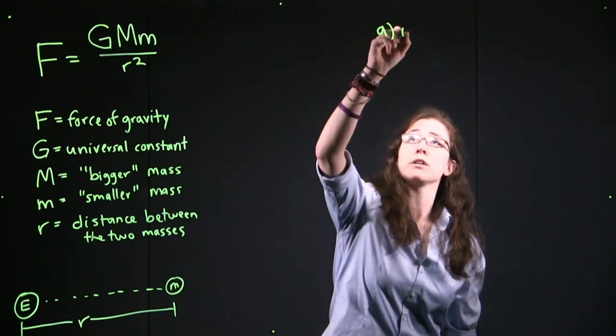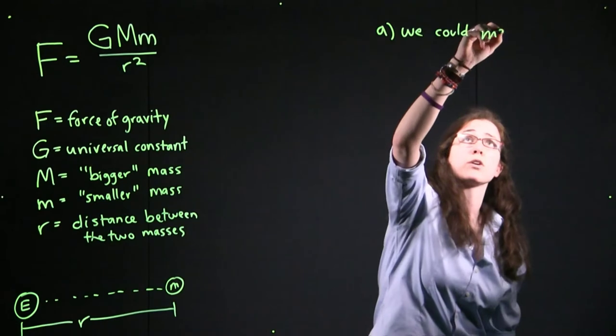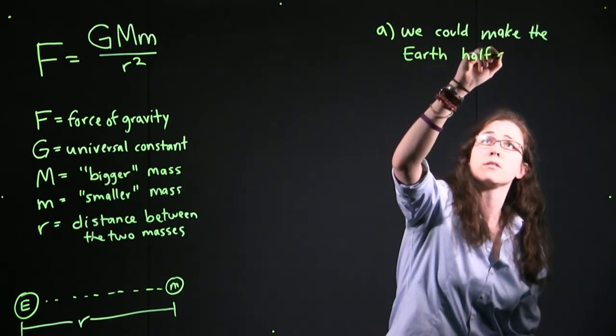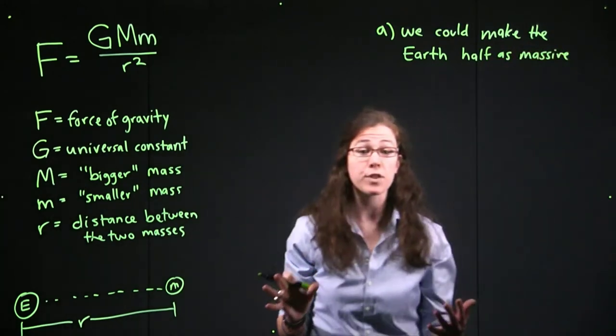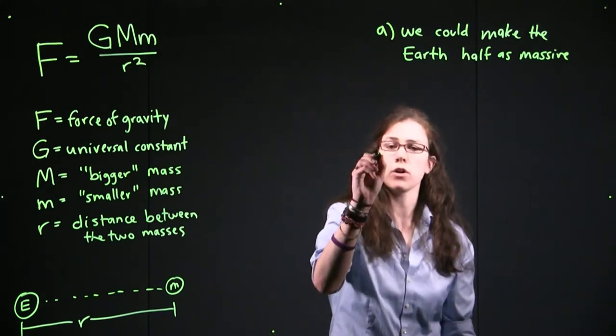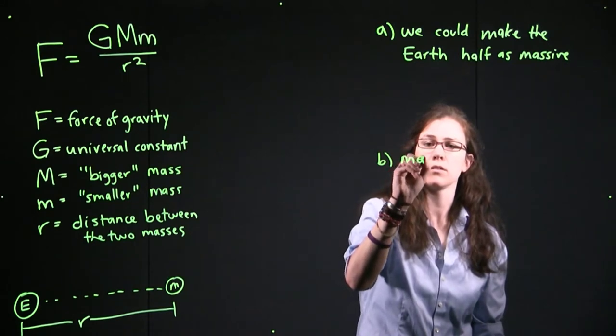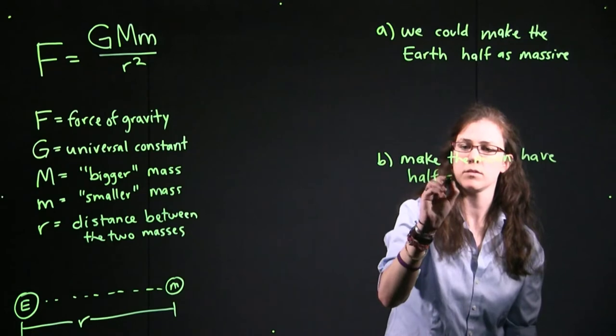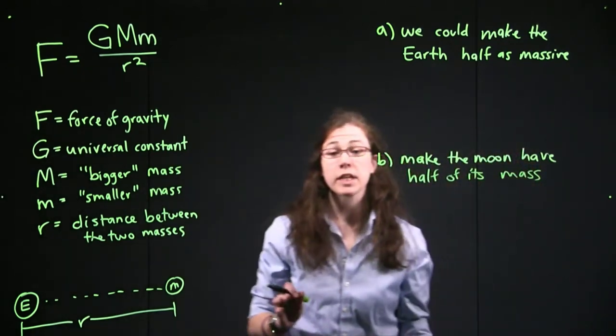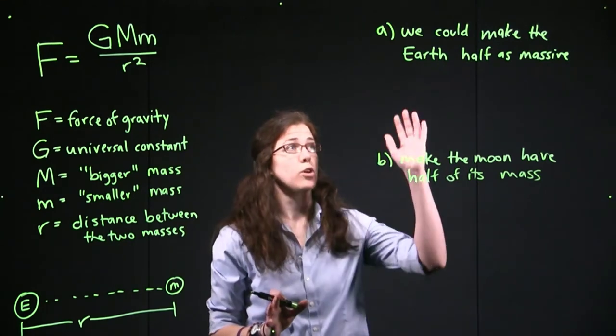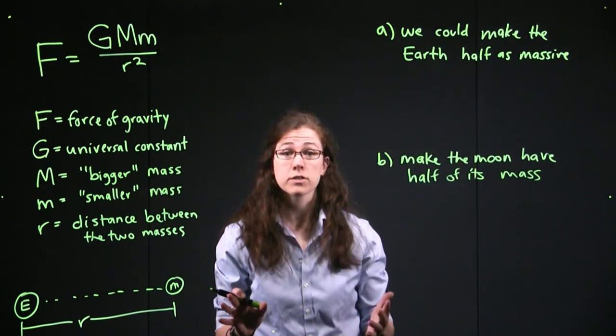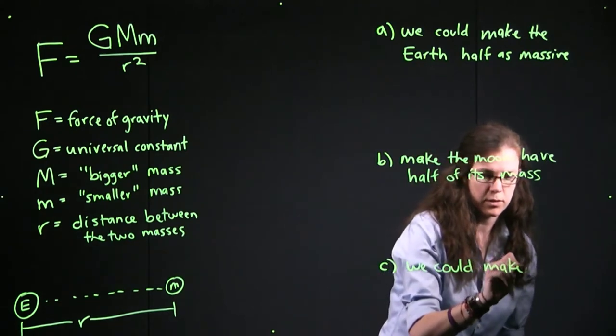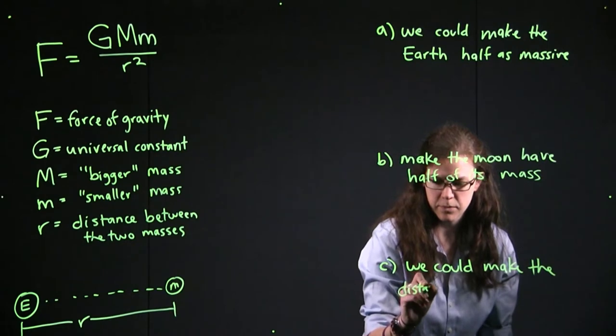So the first one is that we could make the Earth half as massive. So we could take away half the mass of the Earth. So that's one change that we could make to it. We could also make the Moon have half of its mass. And then the next thing that we could do to make that force of gravity smaller, so we can take away mass from the Earth, we could take away mass from the Moon, or we could separate them and make them twice as far away from one another. So we could make the distance twice as big.